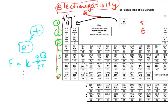So from the Coulomb force equation, as you go down the group, Q — the nuclear charge — does increase. However, R squared increases much more than Q increases, and so the overall force decreases as you go down the group.